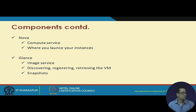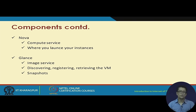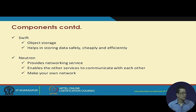The next component is Nova. Nova is the compute service — it is the component where we launch instances. Glance is the image service. For installing instances we need images, so we use Glance. It is also useful for discovering, registering, and retrieving VM images, and through Glance we can also take snapshots that can be used later for installation of other VMs.